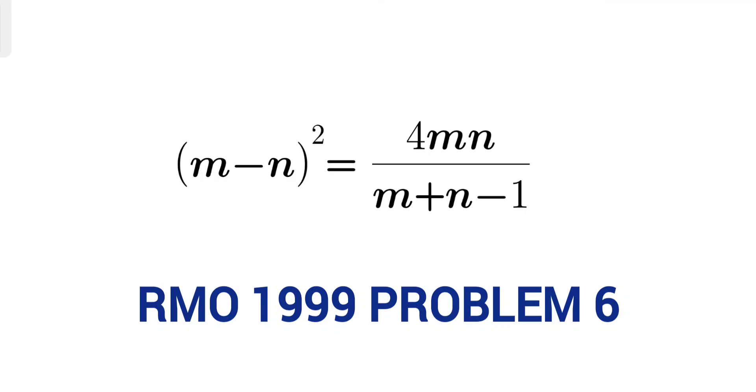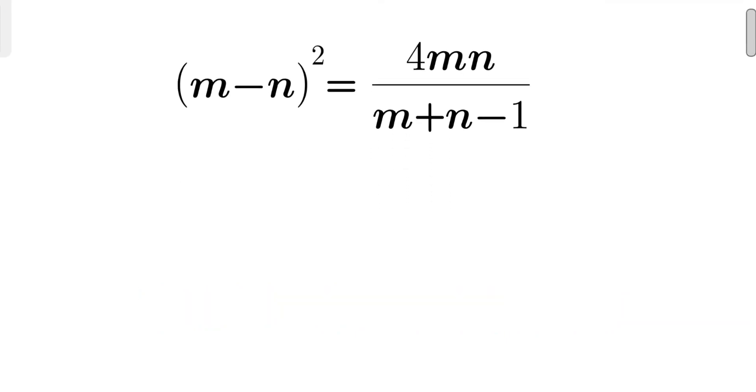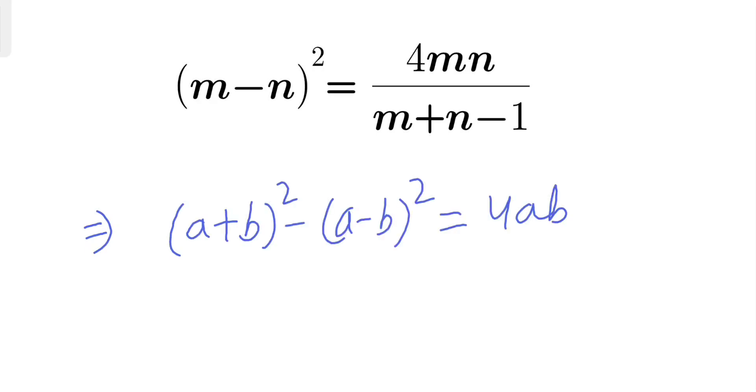So let's solve it. First, let's simplify. What we'll do is use one identity. We'll write this: instead of 4mn...